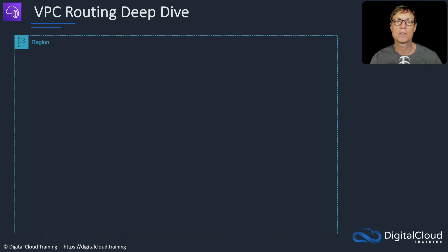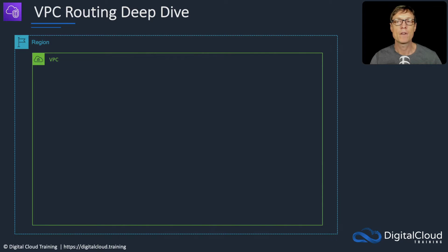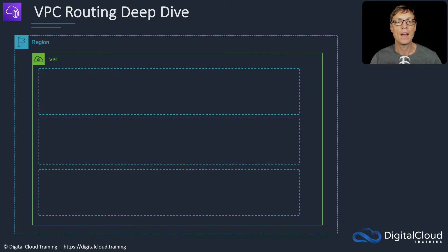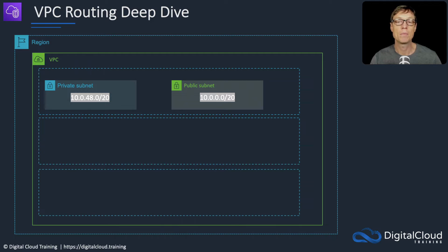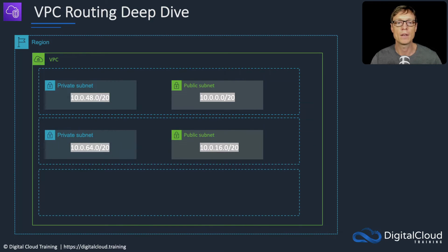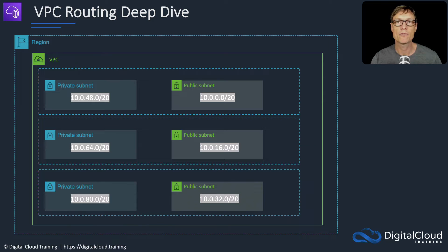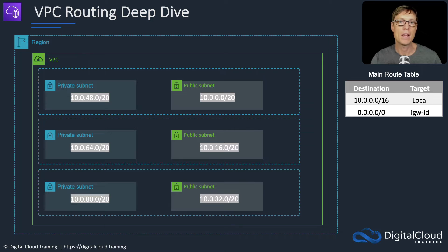Let's look at some of the fundamentals. First, we've got our region and our VPC. We create VPCs within regions, and then we have availability zones. In those availability zones, we've got subnets, and each of those subnets must have a block of addresses. That block comes from the overall CIDR block for that particular VPC. So in this case, we've got three availability zones, each with a subnet, each with its own IP range. We then have a main route table.